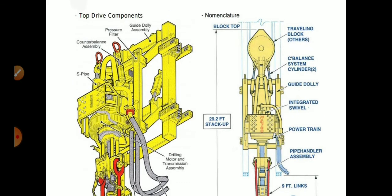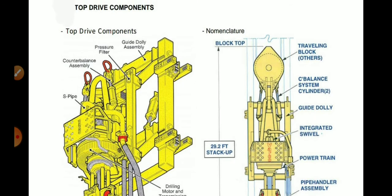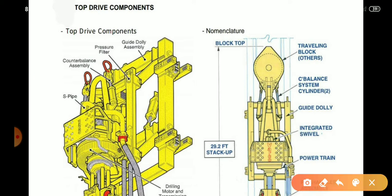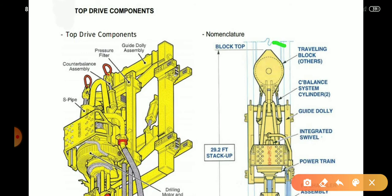It is very important to know the components of the top drive system. The first component is the traveling block — we already covered what a traveling block is and its purpose. It is used to hold the entire top drive on the drill string, supported by the traveling block only.